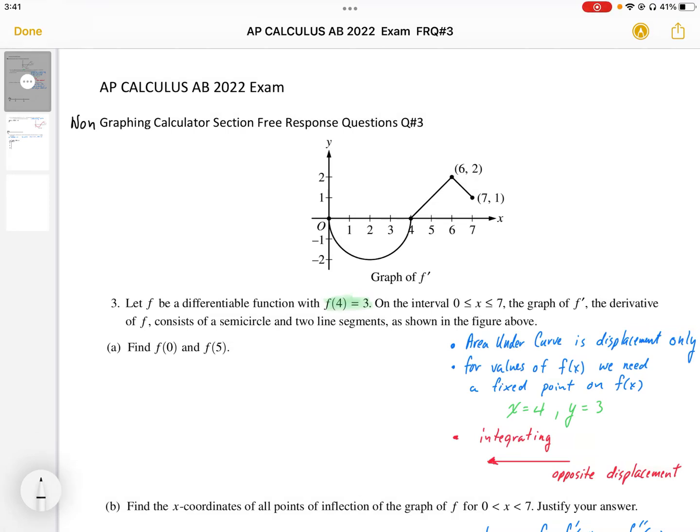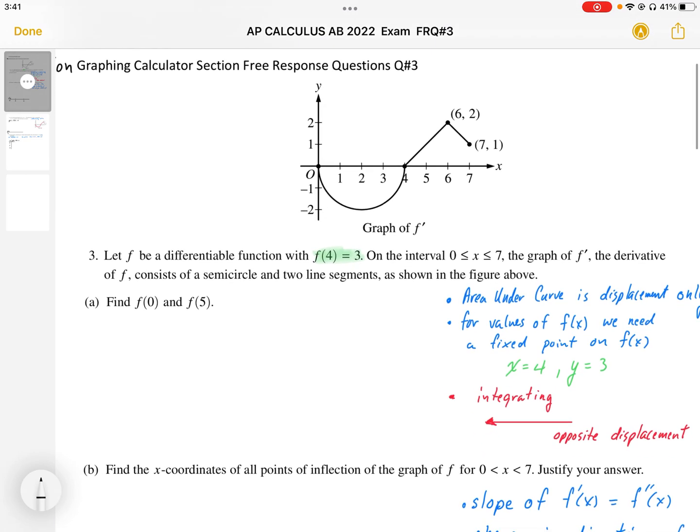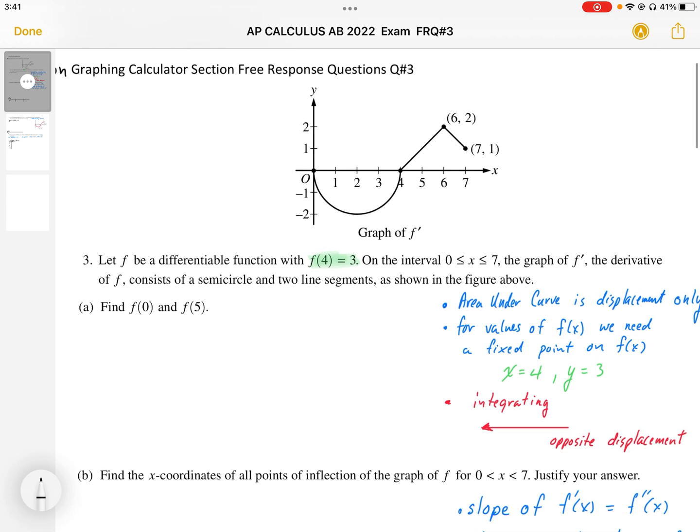Question number three. These questions are from the non-graphing calculator section of the free response section. We've been given a graph of f prime, so this is a derivative function. It says let f be a differentiable function with f of 4 equals 3. On the interval 0 to 7, the graph of f prime, the derivative of f, consists of a semicircle and two line segments shown in the figure above.